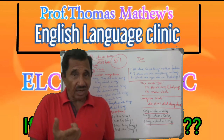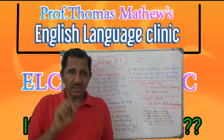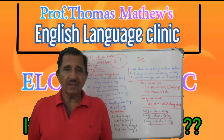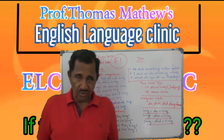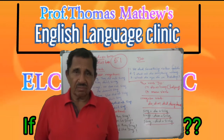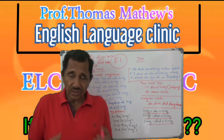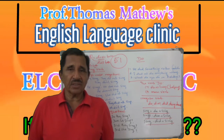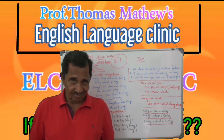So, as an auxiliary verb, 'do' has two functions: one is negative, and the other is questions. And that is used in the context of simple present and simple past only. Clear. Bye.